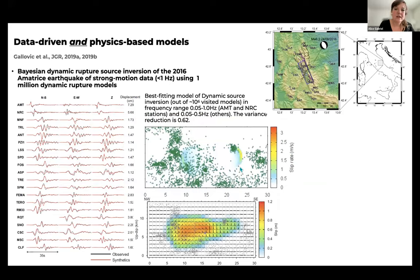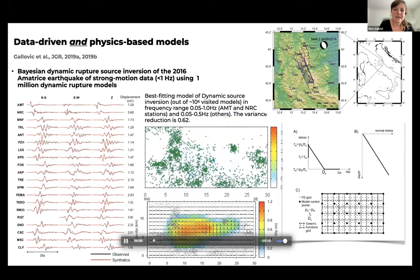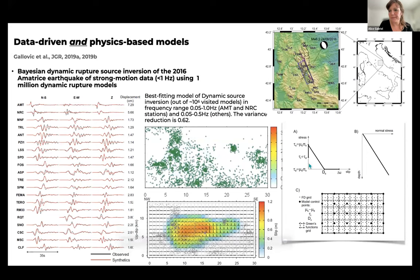For the Amatrice earthquake, we performed a Bayesian dynamic rupture source inversion using strong motion data up to 1 Hz. This is the preferred slip model and animation of the slip rate. To make this model feasible we need some simplifications, but we visit nearly a million dynamic rupture models to come up with the ensemble solution and preferred models. Since there are so many, we are restricted to modeling up to 1 Hz.